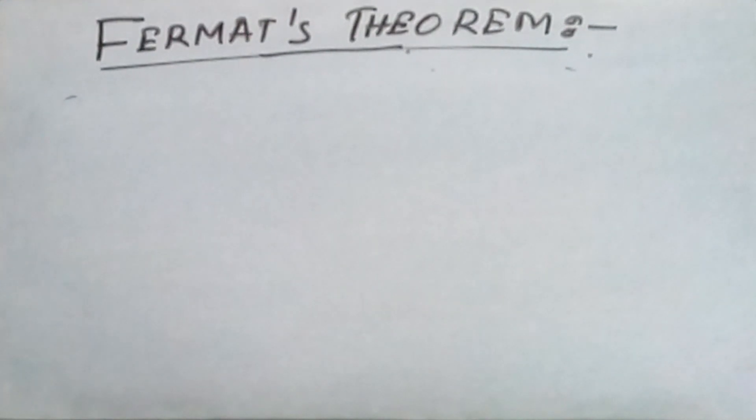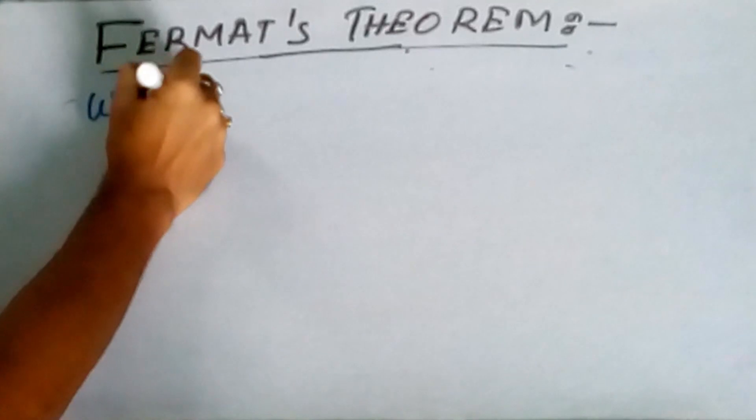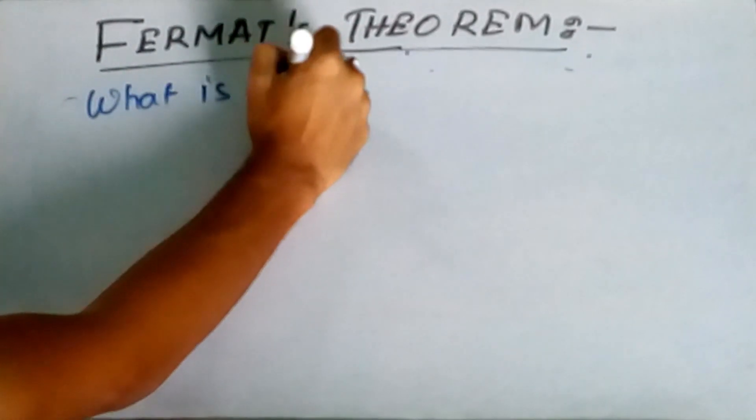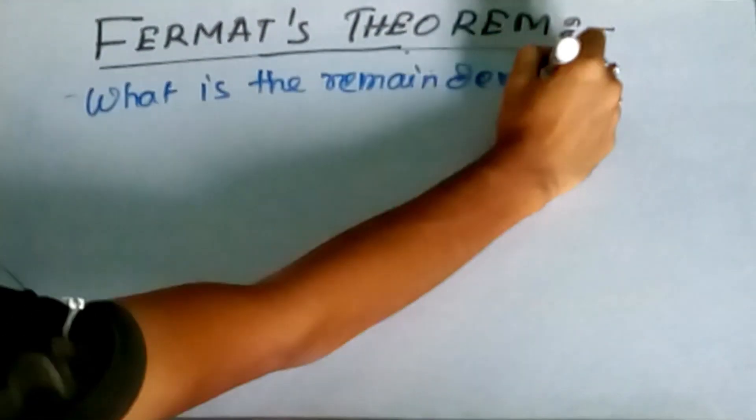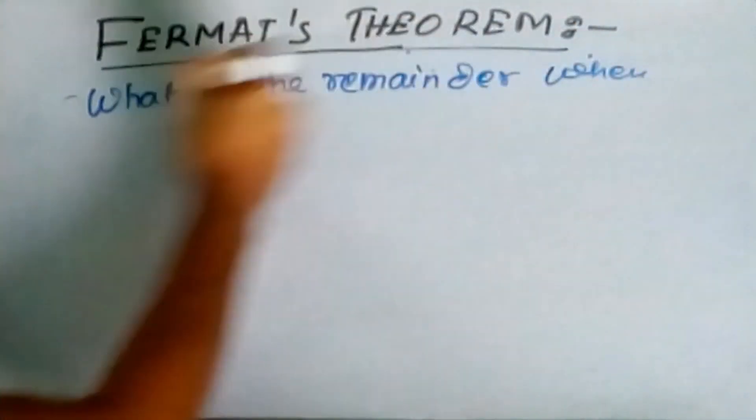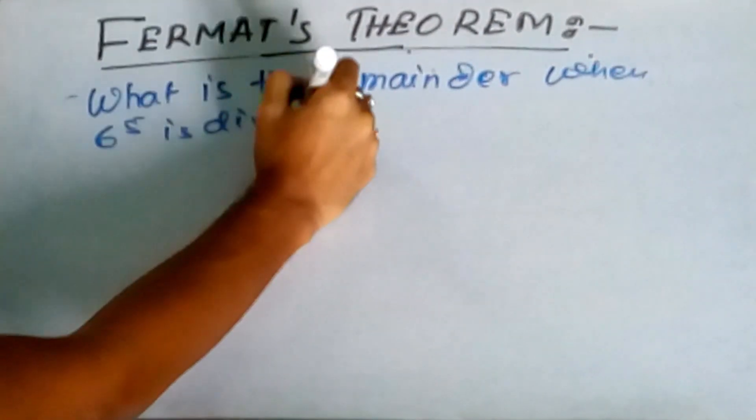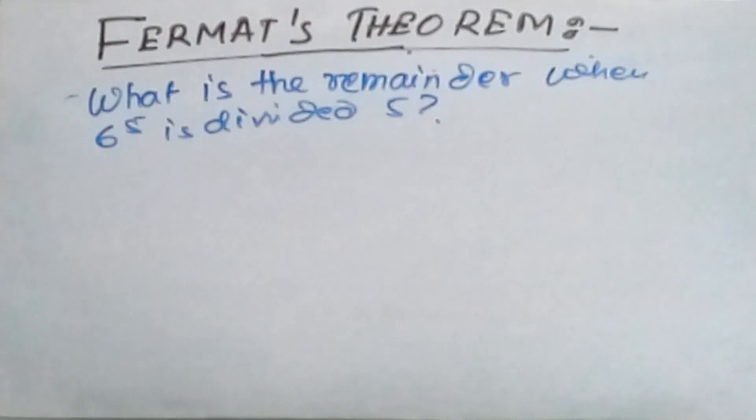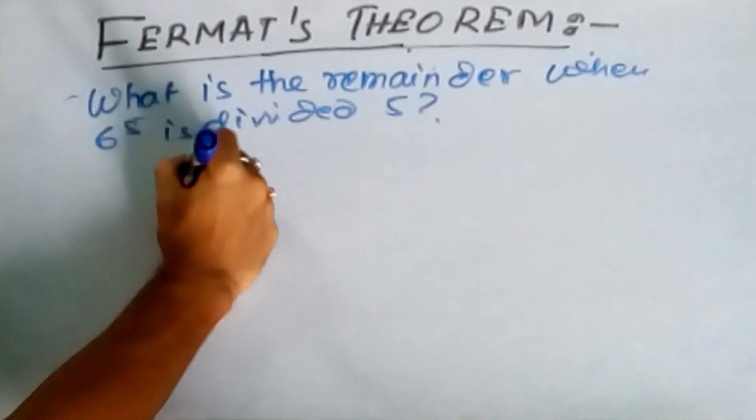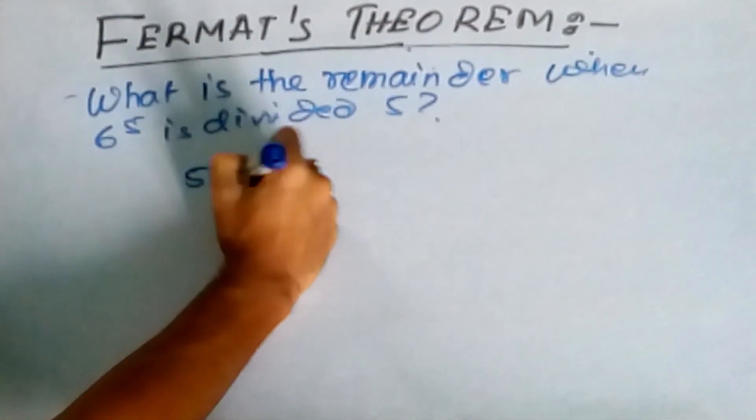Now let's check an application. Say for example, question I've been asked: what is the remainder when 6 to the power 5 is divided by 5? So the remainder has been asked, so you can directly say that it will be found with the help of this Fermat's theorem.